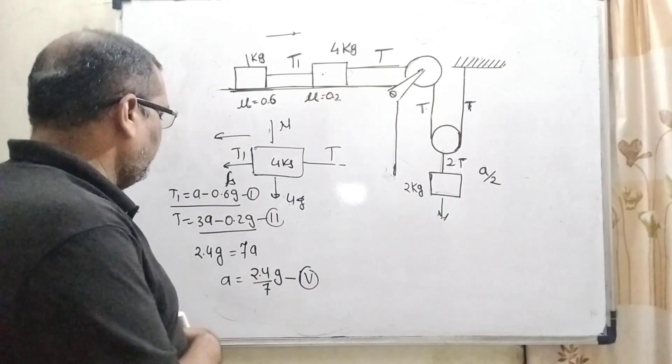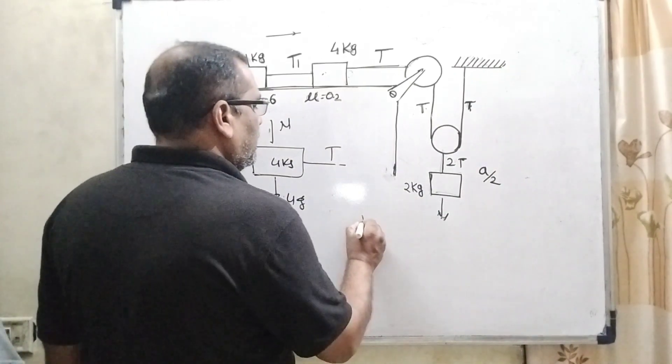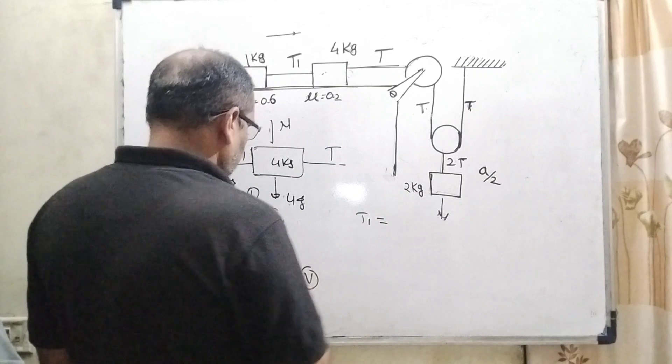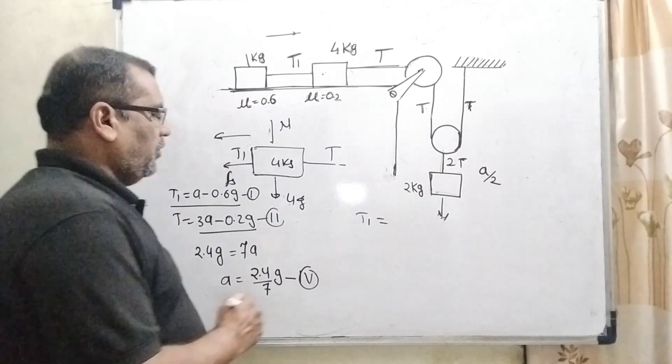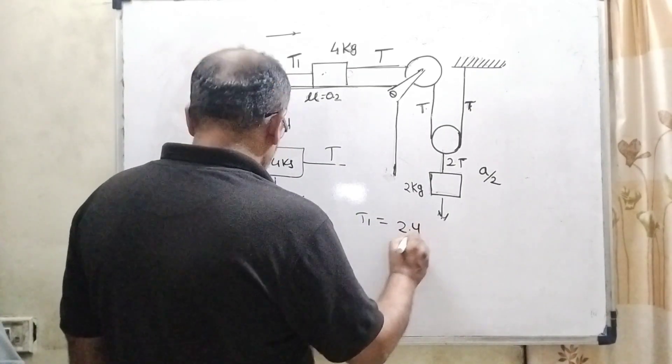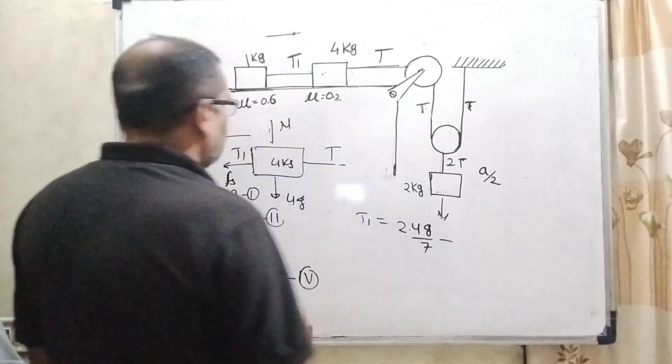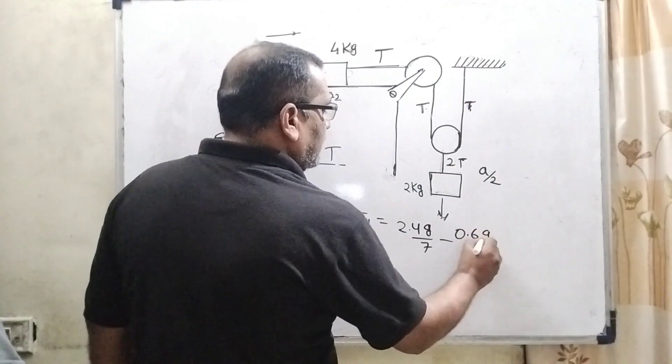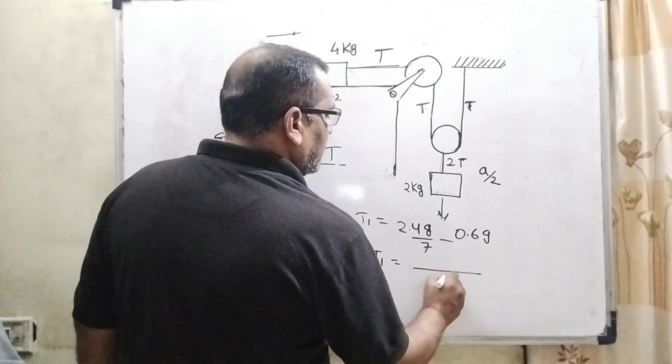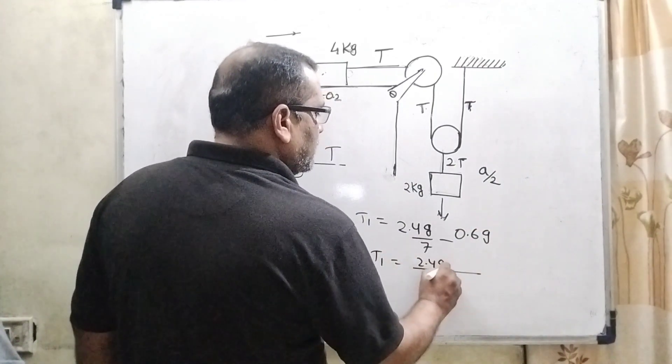Now substituting the value of A in first equation, T1 equal to what is the value of A? 2.4 G upon 7 minus 0.6 G. Taking LCM, 7, 2.4 G, 7, 6 A, 48.